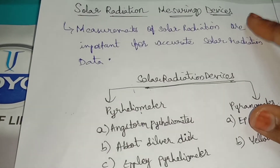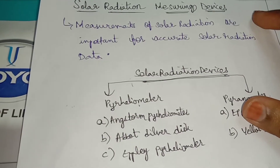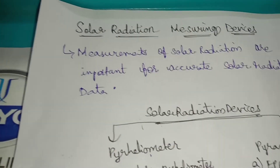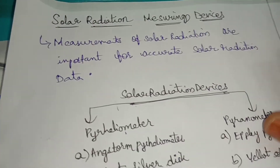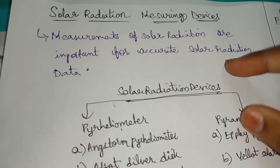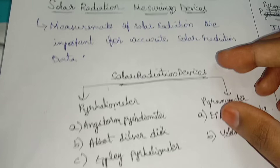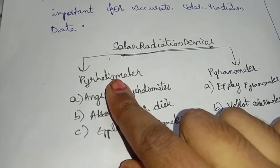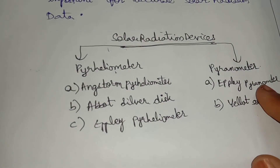In solar radiation measuring devices, the key measurements of solar devices are important for accurate solar radiation data. If you don't have accurate solar radiation data, this measurement is compulsory. This measuring device includes the pyroheliometer and pyranometer.